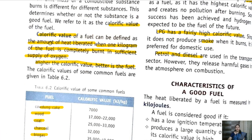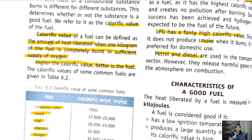To summarize: calorific value is the heat released when 1 kg of any substance is burned. The SI unit is joule per kg (J/kg), but we generally use kilojoule per kg (kJ/kg). Hydrogen has the highest calorific value overall. But if the question asks about the highest calorific value for domestic use, the answer is LPG — liquefied petroleum gas.